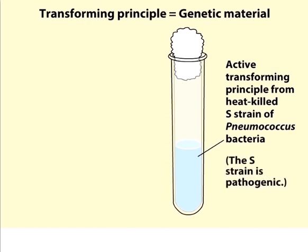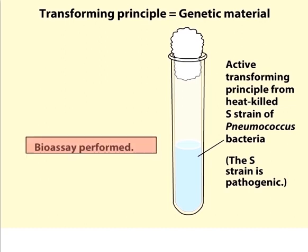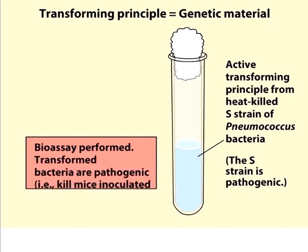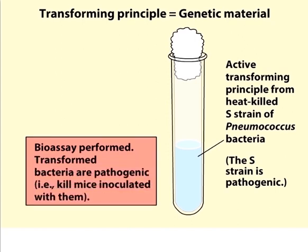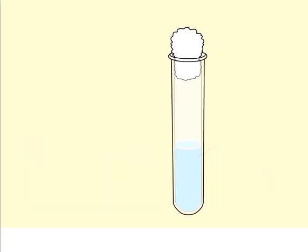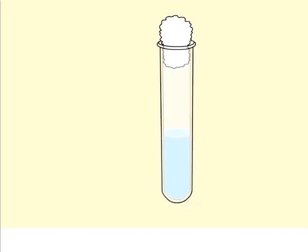They prepared an active transforming principle from a heat-killed S strain of pneumococcus bacteria. A live S strain is pathogenic and kills mice. A bioassay was performed in which this active transforming principle was added to a non-pathogenic R strain of bacteria, and then the bacteria were used to inoculate mice. In such an assay, the bacteria were transformed — they had become pathogenic.